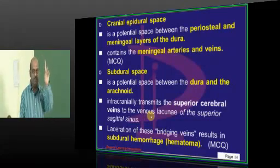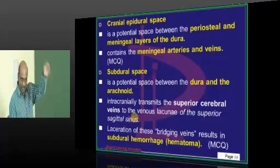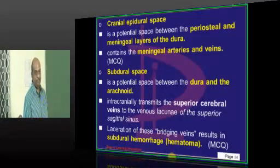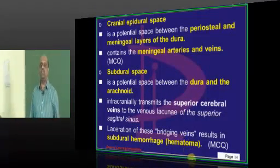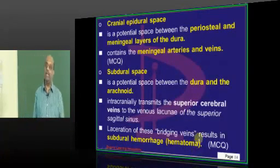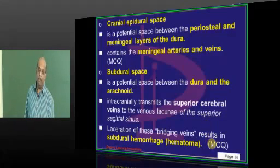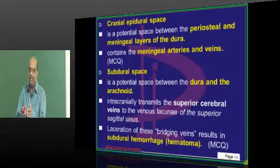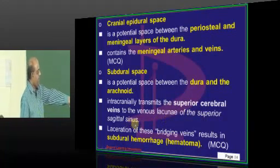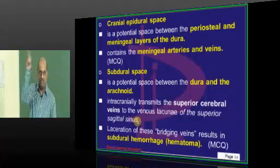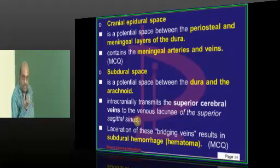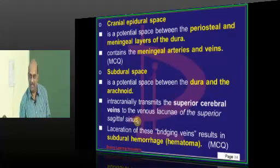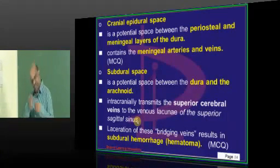Between the superior cerebral vein and the superior sagittal sinus you have bridging veins. Those bridging veins pass through the subdural space. Any laceration of these bridging veins will lead to a bleed into the subdural space — called subdural hematoma. Why is it more common in elderly people? Once we become elderly, the brain shrinks. When the brain shrinks, the distance between the superior sagittal sinus on the dura and the superior cerebral vein on the brain increases, the bridging vein becomes stretched, it is torn, and bleeding occurs into the subdural space.